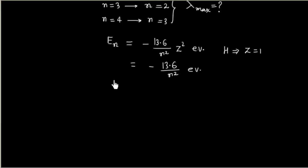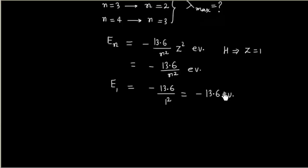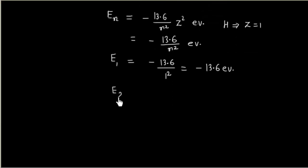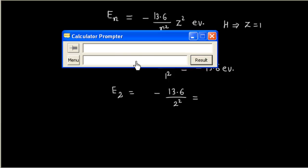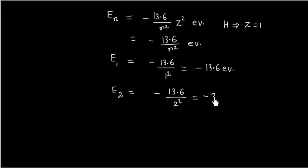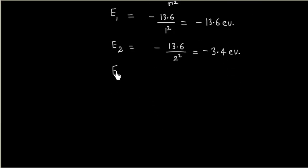We can calculate the corresponding energies for each level. For E1, n=1, so E1 = -13.6 / 1² = -13.6 eV. For E2, n=2, so E2 = -13.6 / 4 = -3.4 eV.